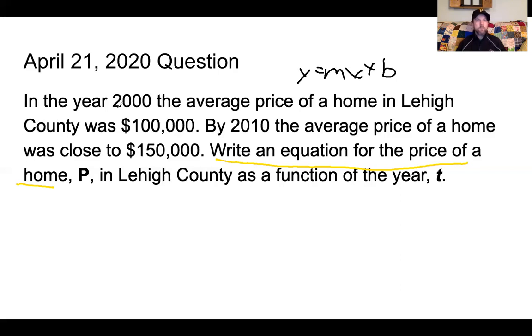So the numbers that we have that we're working with, we are going to work with all of these numbers in one way or another. We have the year 2000, 100,000, and 150,000, and we're also told to use these two variables. So the equation that we're going to write is for the price of a home, P. And then in the year 2000, this right here, this is where we start. We're starting in the year 2000 with $100,000 homes.